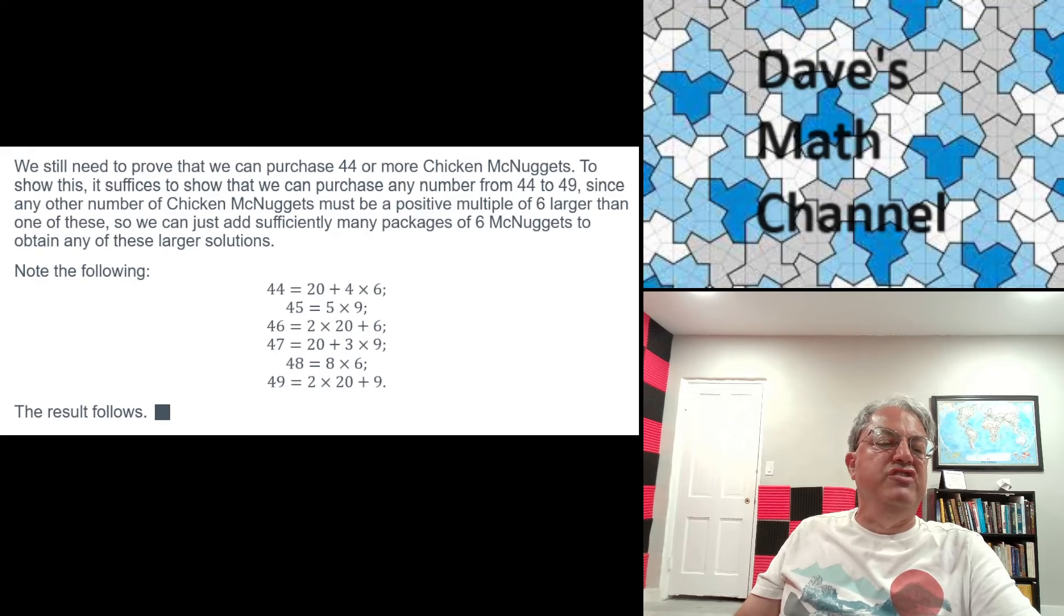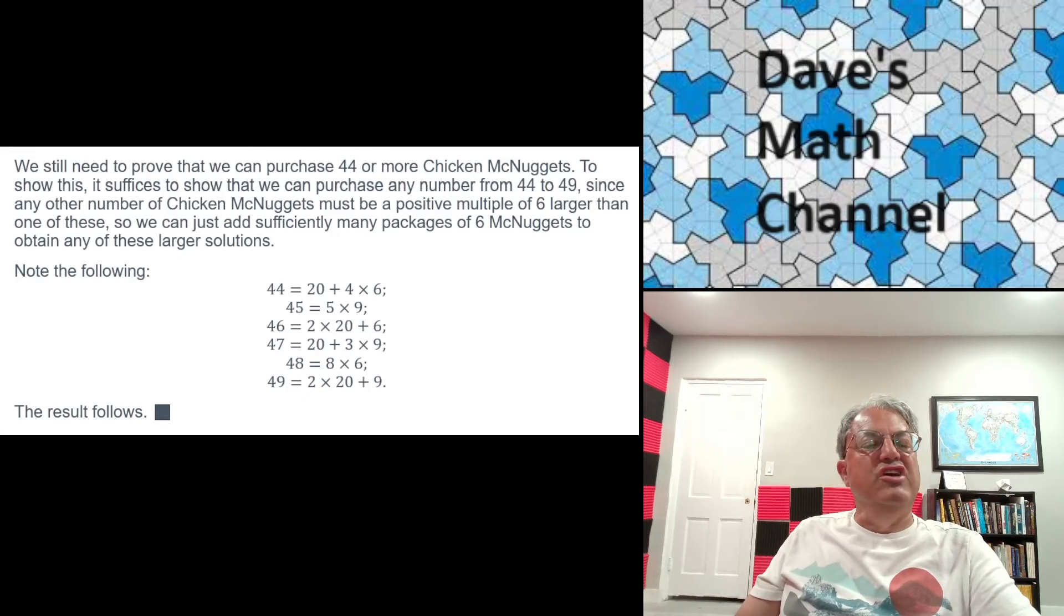Any number bigger than these has the same remainder modulo 6 as one of these numbers. 100 mod 6 is 4 and 46 mod 6 is 4. So you'd have to purchase 46 and then another 54. Well, 54 is 6 times 9. So just purchase another 9 6-packs added to the solution for 46. See how that works?